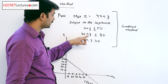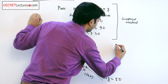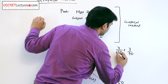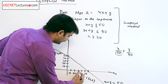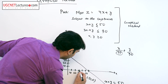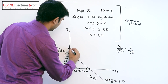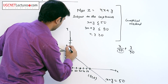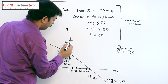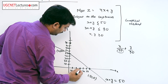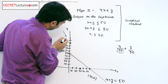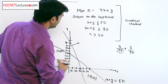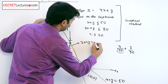For the second equation, 3x + y = 90, the x-intercept is 30 and the y-intercept is 90. Drawing a line between these two points gives us the line 3x + y = 90.